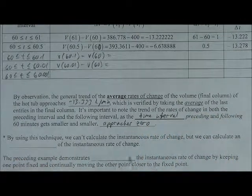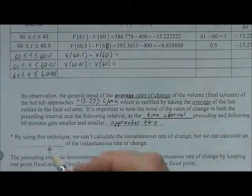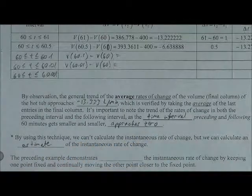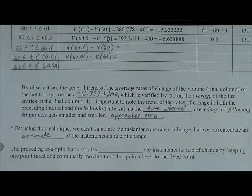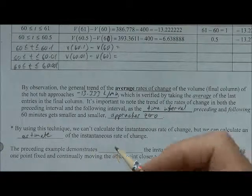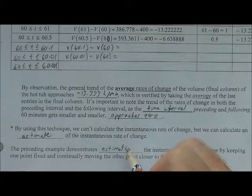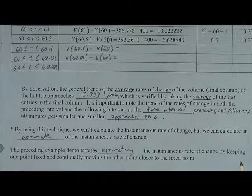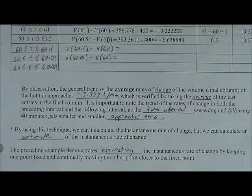By using this technique, we can't calculate the instantaneous rate of change itself, but we can calculate an estimate of the instantaneous rate of change. So this example demonstrates estimating the instantaneous rate of change by keeping one point fixed and continually moving the other point closer to the fixed point.